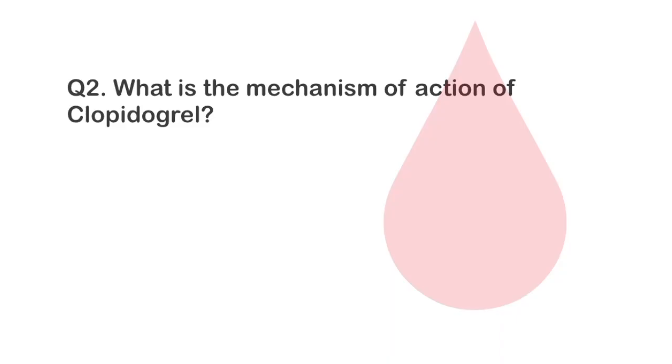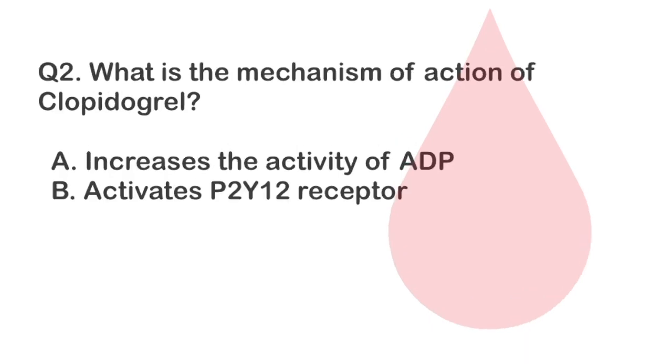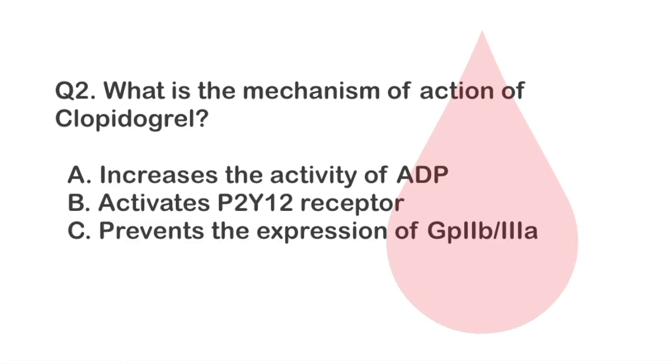What is the mechanism of action of clopidogrel? Option A increases the activity of ADP. Option B activates P2Y12 receptor. Option C prevents the expression of GP2B3A.